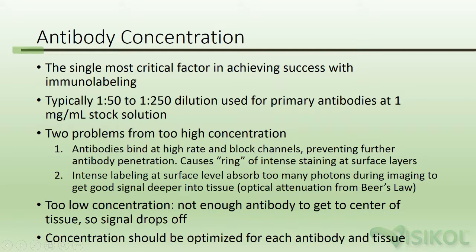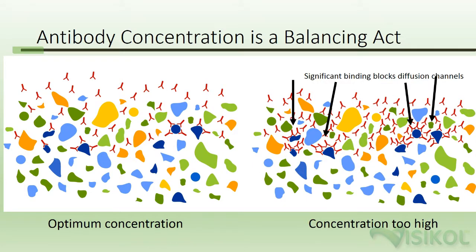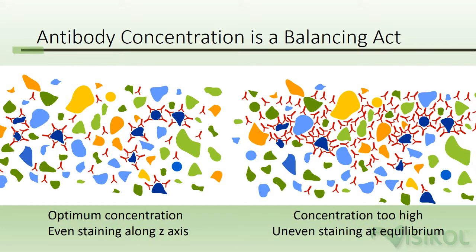Intense labeling at the surface causes too many photons to be absorbed during imaging to get a good signal deeper into tissue — this is optical attenuation due to Beer's Law. Too low a concentration means not enough antibody will reach the center of the tissue, so the signal drops off. Concentration should be optimized for each antibody and tissue. At optimum concentration, antibodies penetrate and label evenly along the Z-axis. With concentration too high, we obtain uneven staining as a large amount of antibody is stuck in the upper layers.